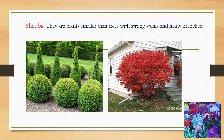Shrubs are plants smaller than trees with strong stems and many branches. For example, rose. In the picture, you can see an example of a shrub — it is a bushy type of plant having many branches.